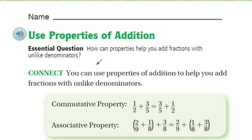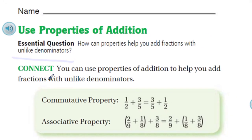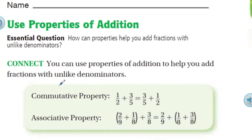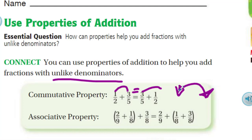Let's get serious now. We're looking at the problem and it says: how can properties help you add fractions with unlike denominators? It says connect: you can use properties of addition to help you add fractions with unlike denominators. First, we have the commutative property, which basically states that the order of the terms doesn't change the outcome of the answer. For example, one-half plus three-fifths is equal to three-fifths plus one-half. Does it matter the order? You could reverse them. The order does not change the outcome.